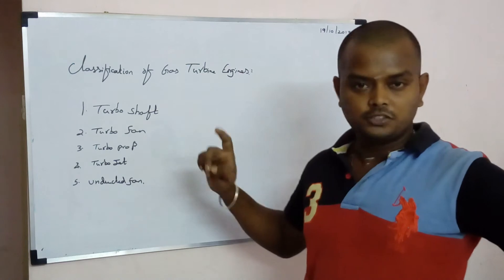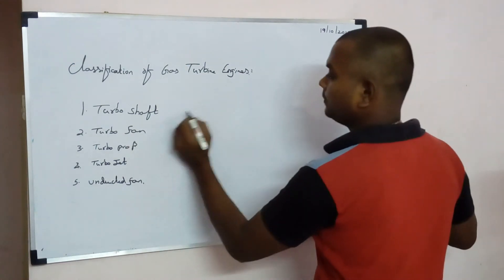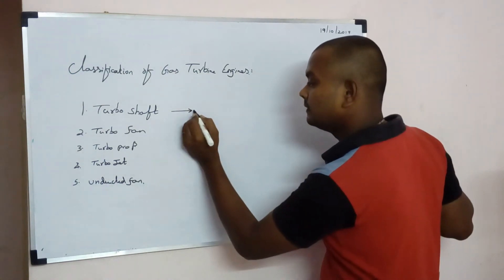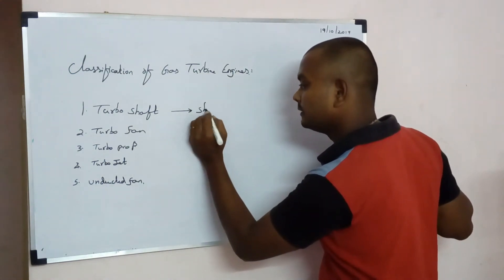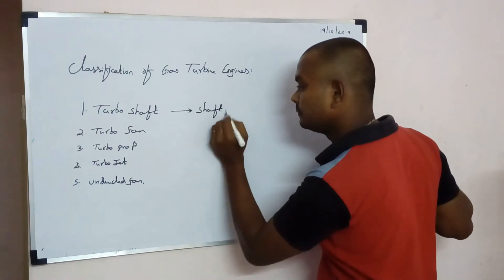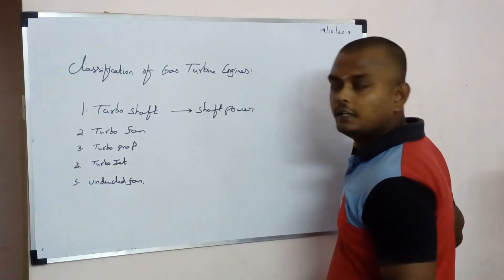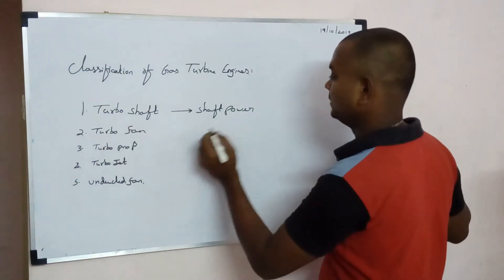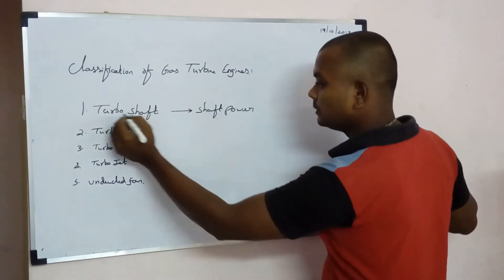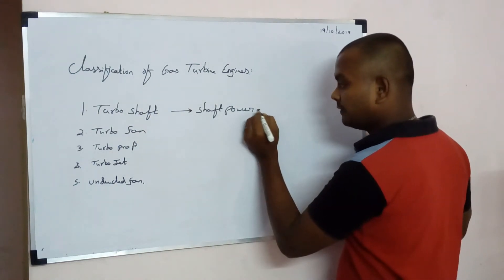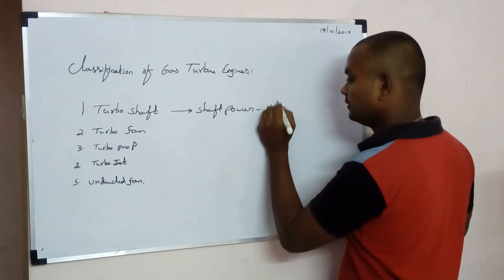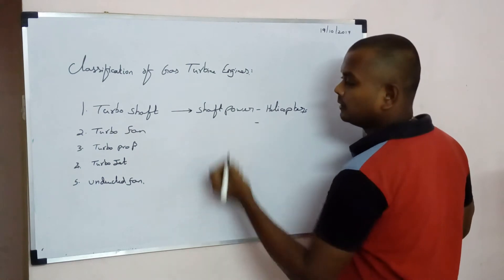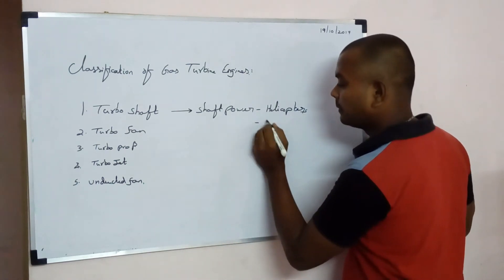First, we look at the turbo shaft engine and its users. The turbo shaft engine is used where shaft power is needed. In general aircraft it is not used, but specifically in helicopters. Helicopters use the turbo shaft engine, and it can also be seen used in power plants.